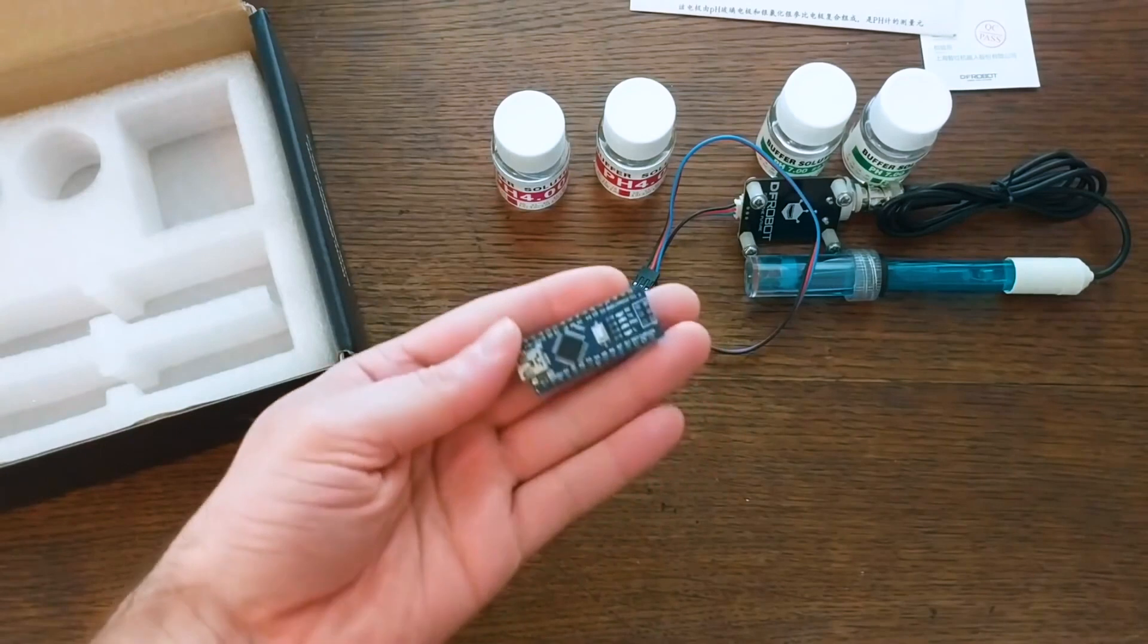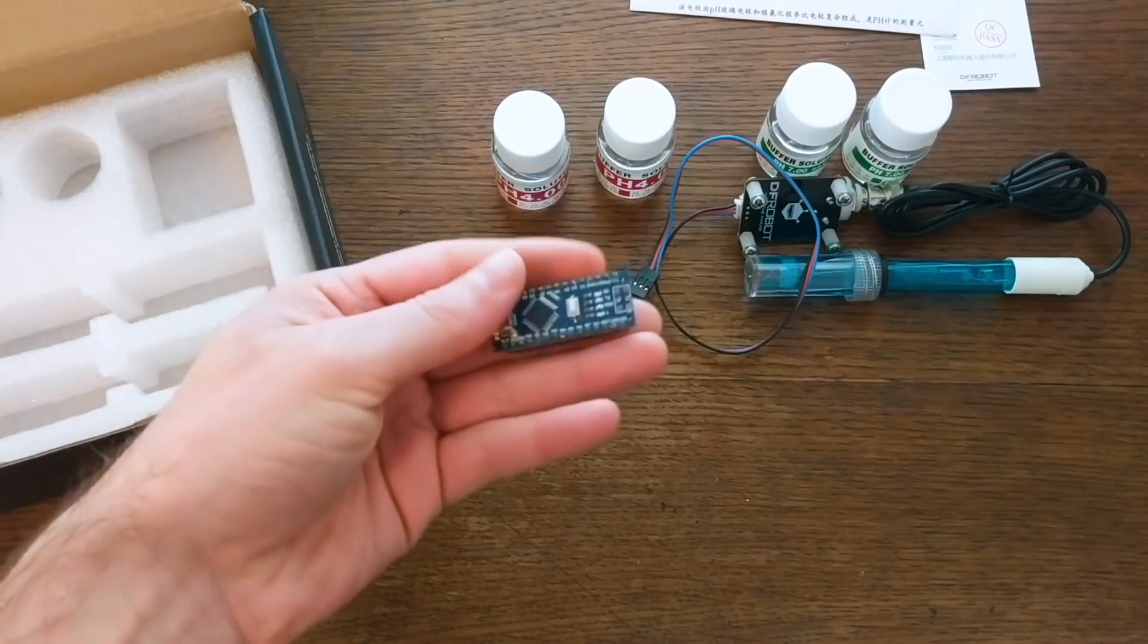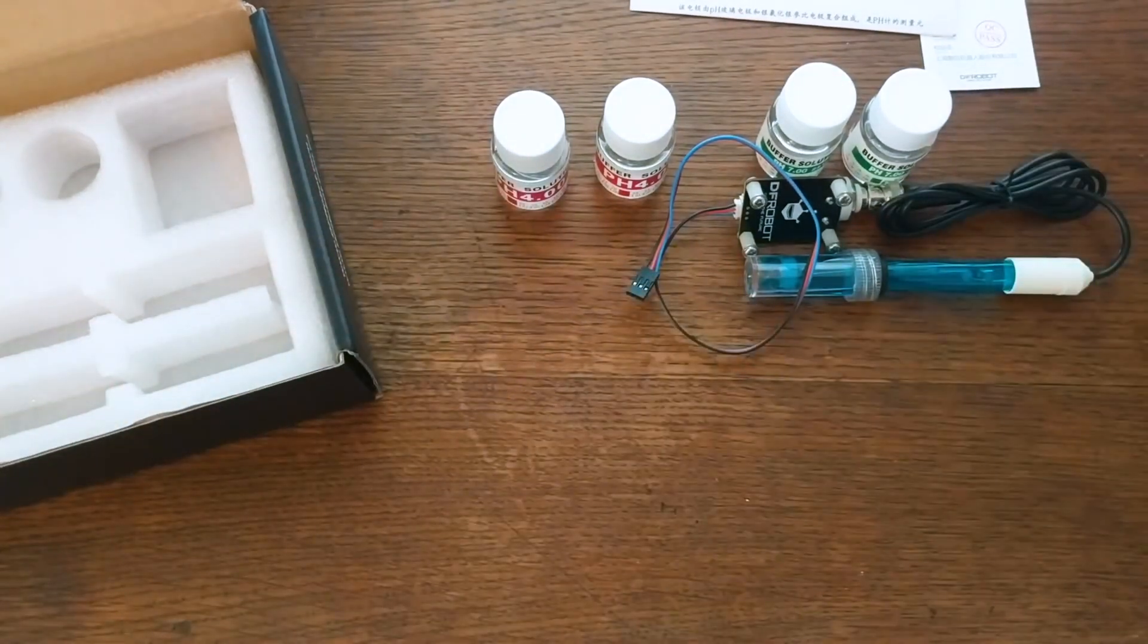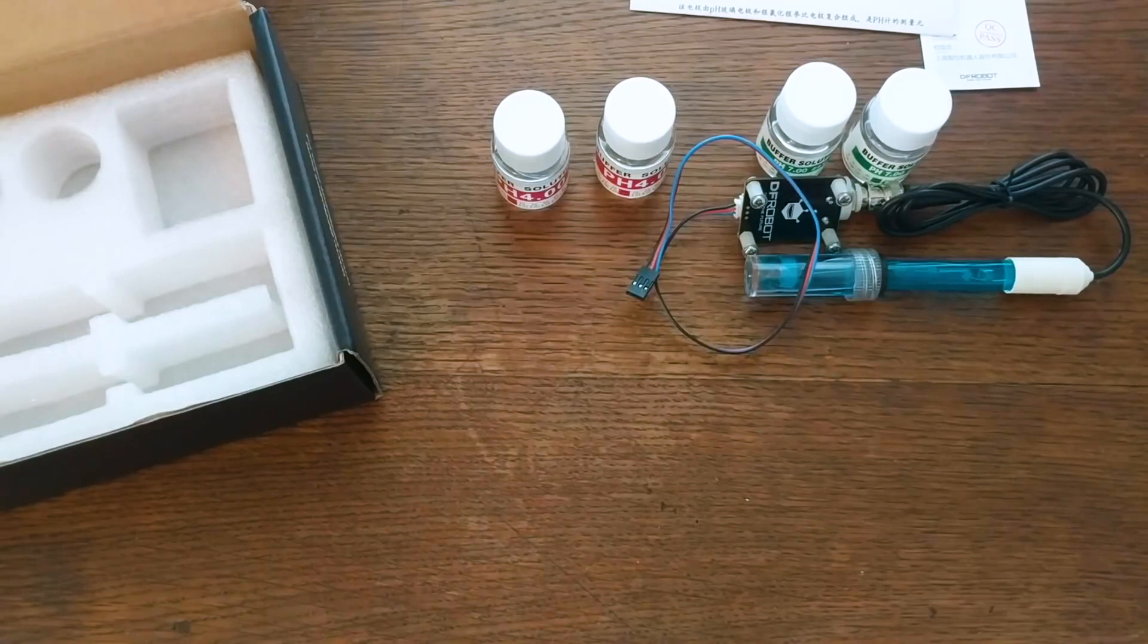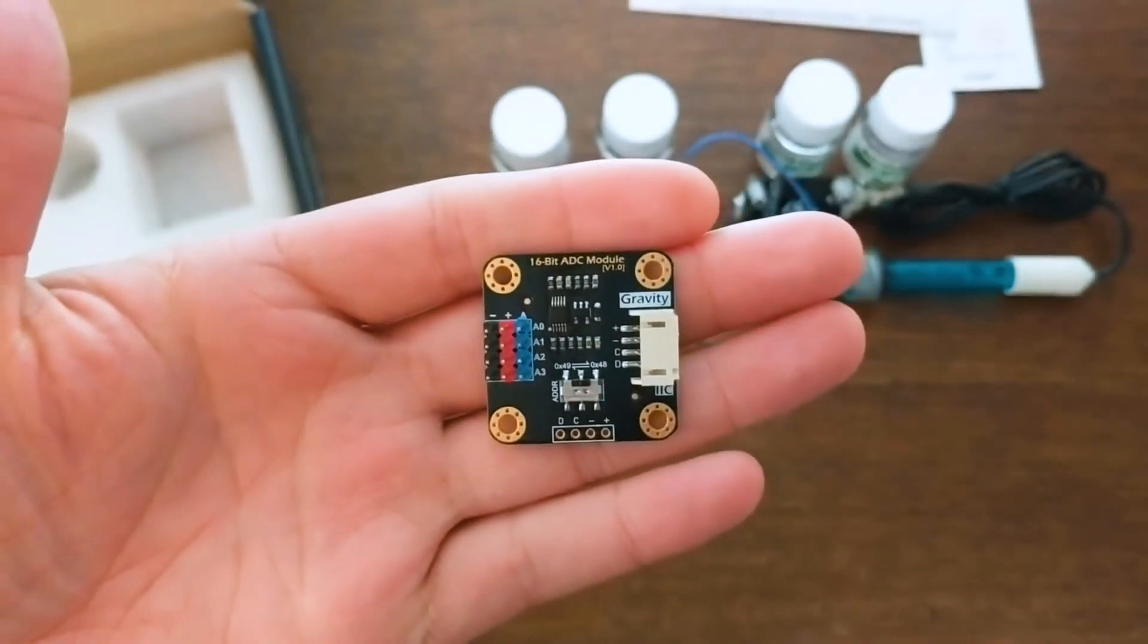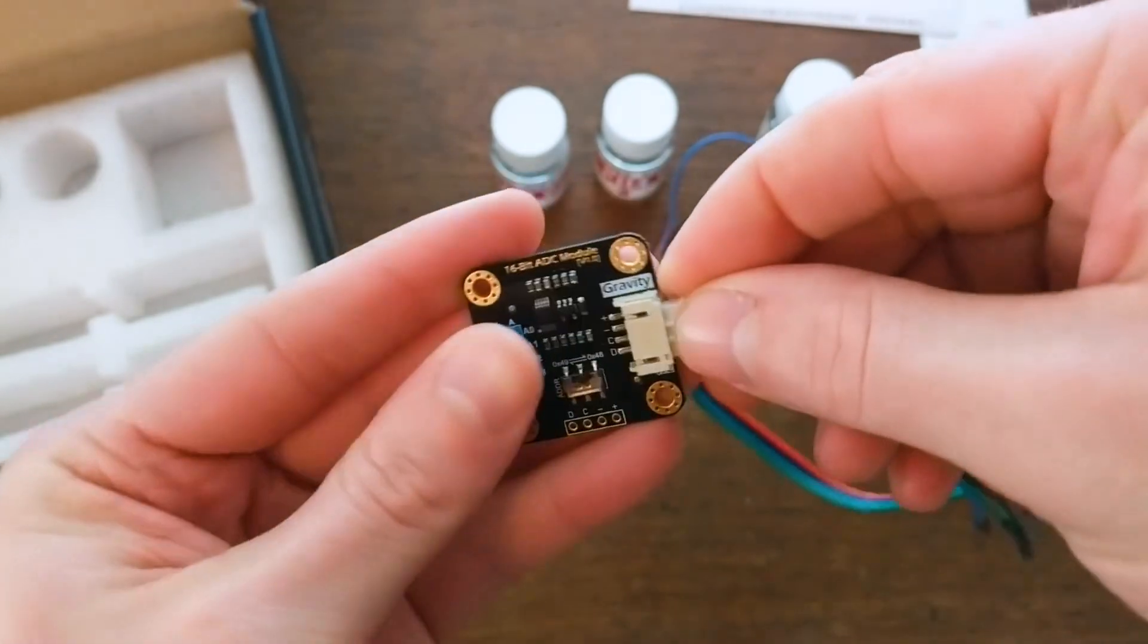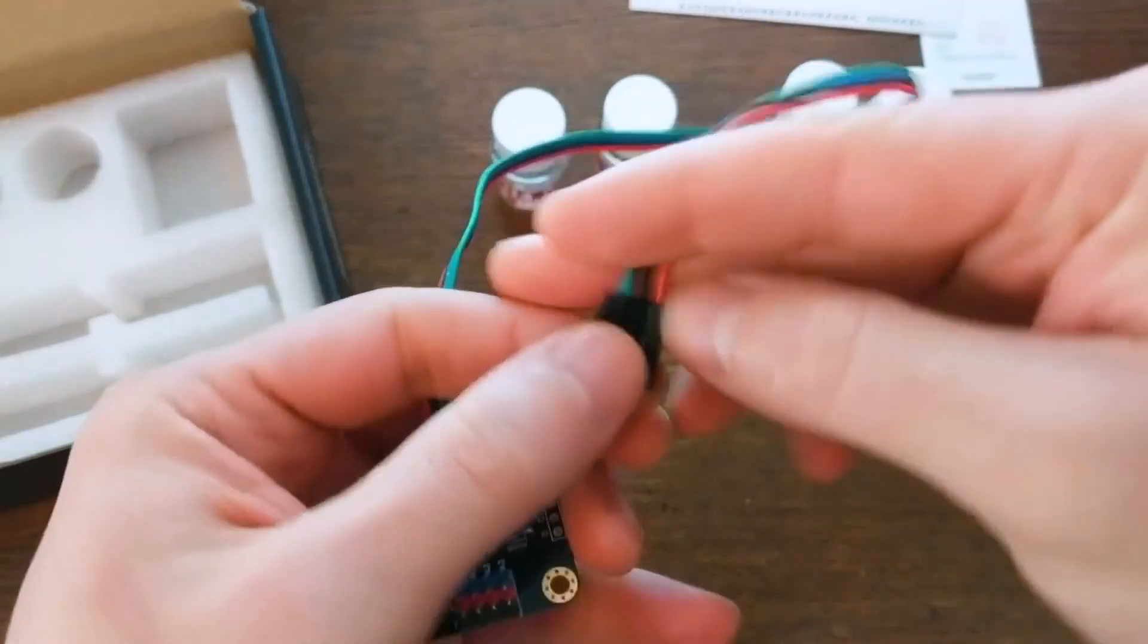If you have an Arduino, you're all set. DFRobot has published an Arduino library that handles the measurements and calibration and everything. You just plug it in, download their library, and you can start using it as is. They even have a Python library for the Raspberry Pi, but you will need an analog-to-digital converter since the Raspberry Pi doesn't have analog input. DFRobot also makes one of these 16-bit converters that works with the Raspberry Pi. And just from looking at their code, I can tell that this was the intended setup for this sensor.